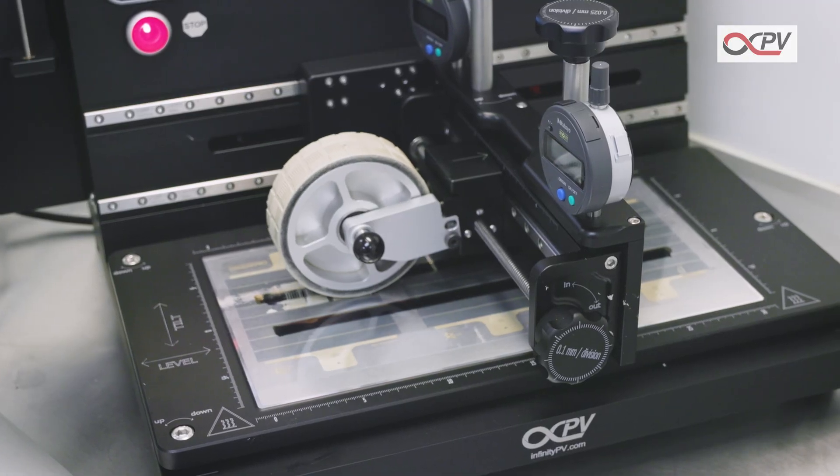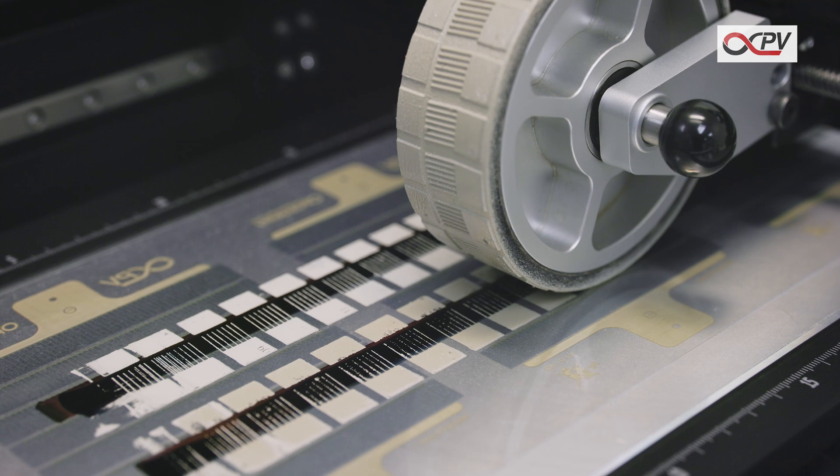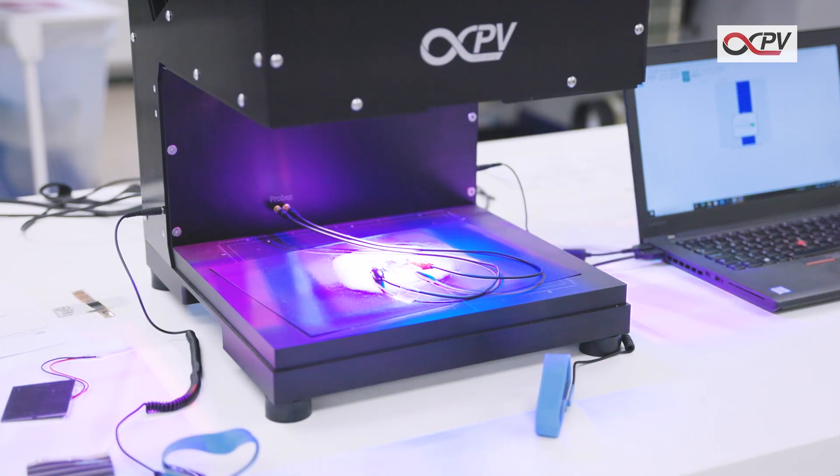Start the Flexo Roller. Once the Flexo Roller is done, repeat the process for the second stripe. The solar cell is now complete and can be cut out and characterized.